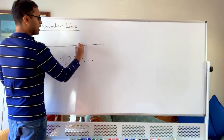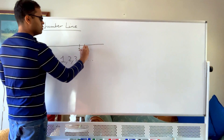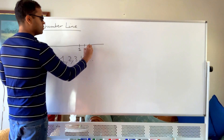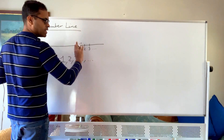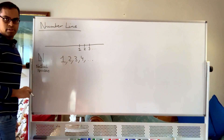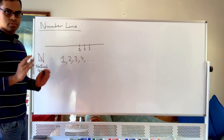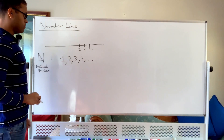We can denote the natural numbers on the number line: 1, 2, 3, and so on, with the line going on indefinitely in that direction. So we've consolidated what the natural numbers are.